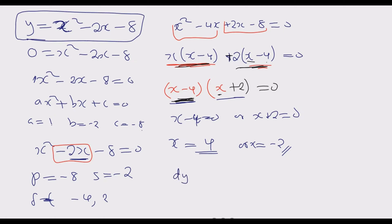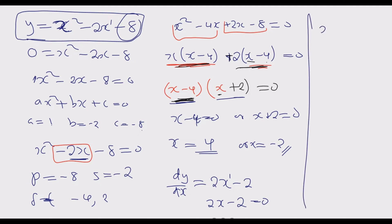Differentiating y equals x squared minus 2x minus 8: dy/dx equals 2 times 1 which is 2, giving 2x to the power 1, then minus 1 times 2 which is negative 2, and the constant term drops to 0. So dy/dx equals 2x minus 2. At the turning point this equals 0, so 2x equals 2, giving x equals 1.